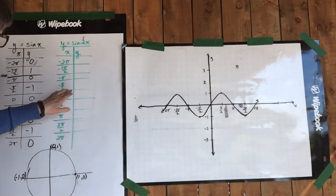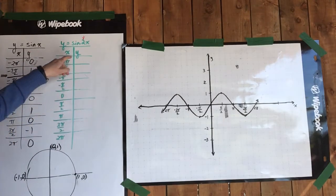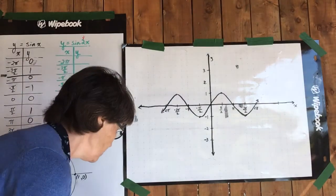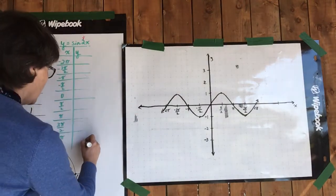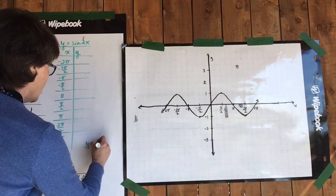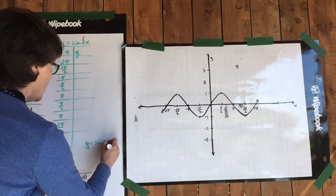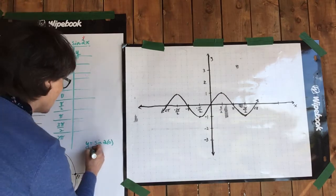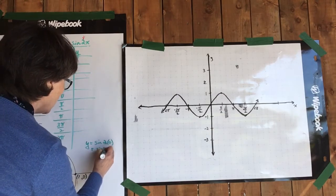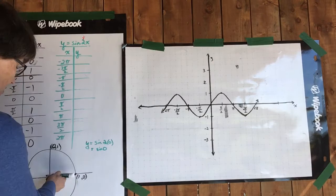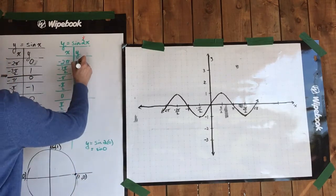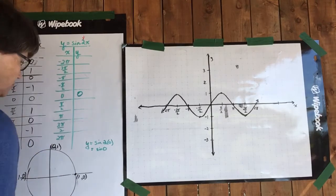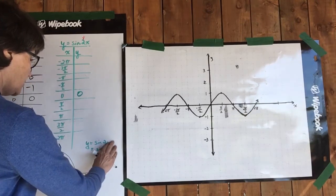Start down here at 0 again. So when x equals 0, we need to substitute that in: y equals sine 2 times 0. So 2 times 0 is 0, so we're actually looking for the sine of 0. Sine of 0 is 0. Next one: pi over 2, so substitute pi over 2 in here.